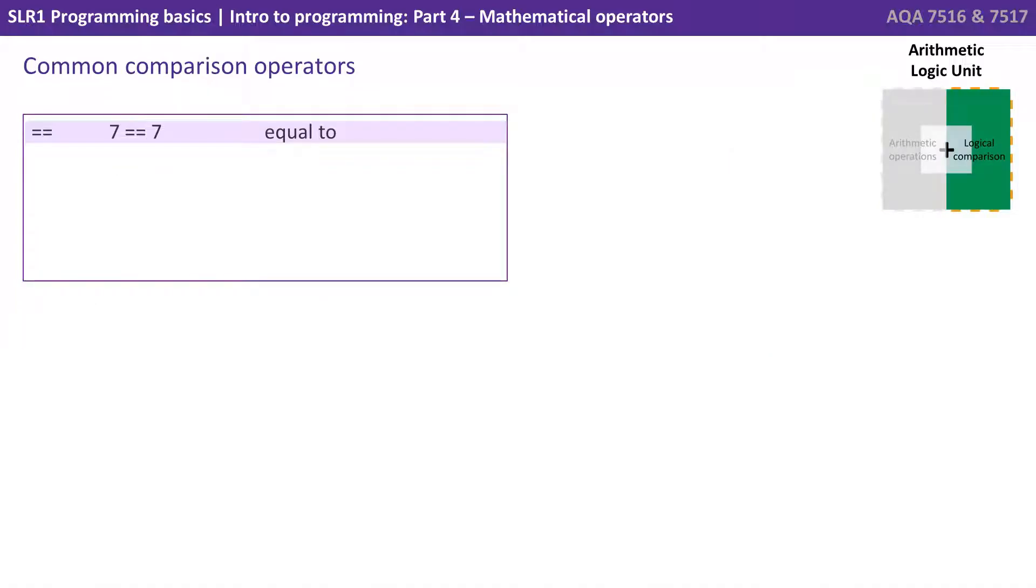Let's now look at one of the other main parts of the arithmetic logic unit, and that's doing logical comparisons. So first we have the double equals, that means equals to, so 7 double equals 7. Then we have not equals to, this is commonly the exclamation mark followed by equals, so 7 is not equals to 5. We have less than, 5 is less than 7.